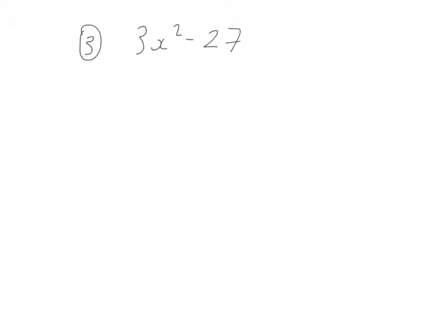Question 3: factorise 3x squared minus 27. Well, there is a common factor that we can take out: 3 bracket x squared minus 9. You're not finished there, because we can do a difference of two squares inside.